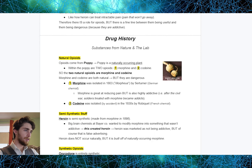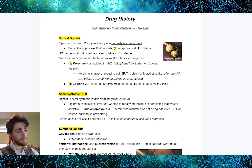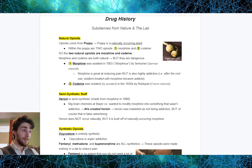This all leads us to drug history. We're going to talk about substances from nature and substances from the lab. Starting off with natural opioids — opioids come from the poppy plant. Within the poppy plant, there are two opioids: morphine and codeine. The two natural opioids are morphine and codeine, and they are both naturally occurring but also both dangerous.